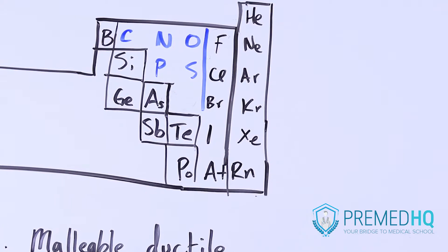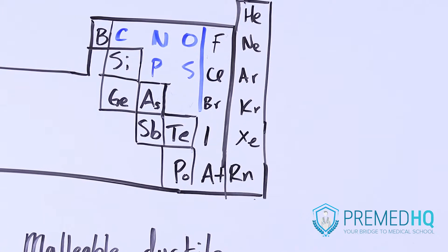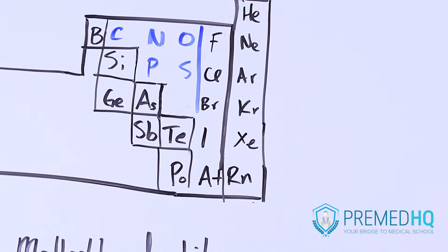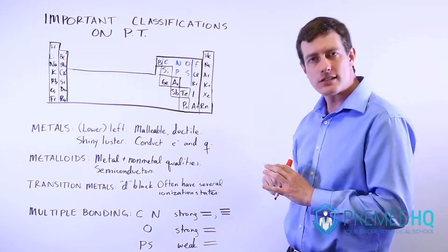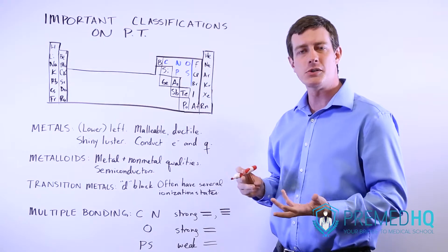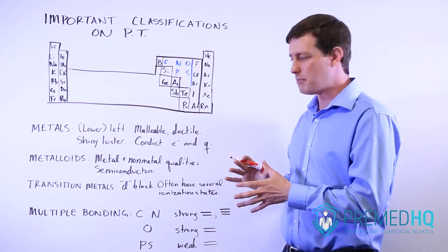It's also good to be aware of the elements that can do multiple bonding, and there aren't many of them. They're all represented here: C, N, O, P, and S are the ones that you're most likely to encounter that do multiple bonds.